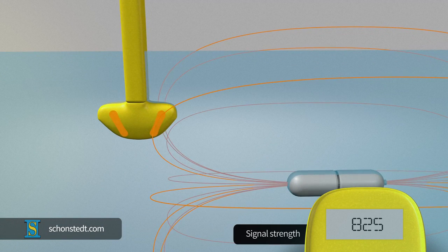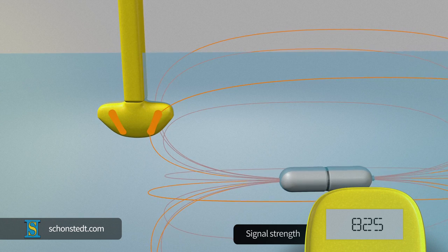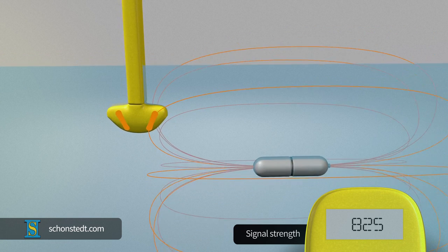In this case, the field lines of the signal emitted by the sonde flow through the sensors, generating a strong signal.